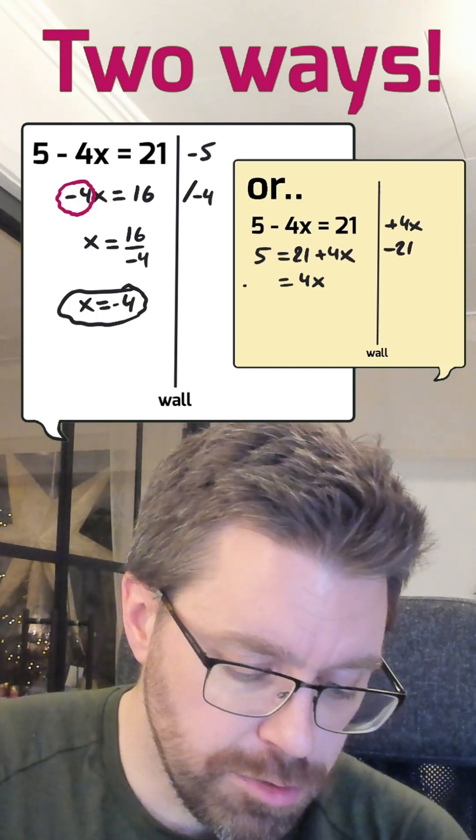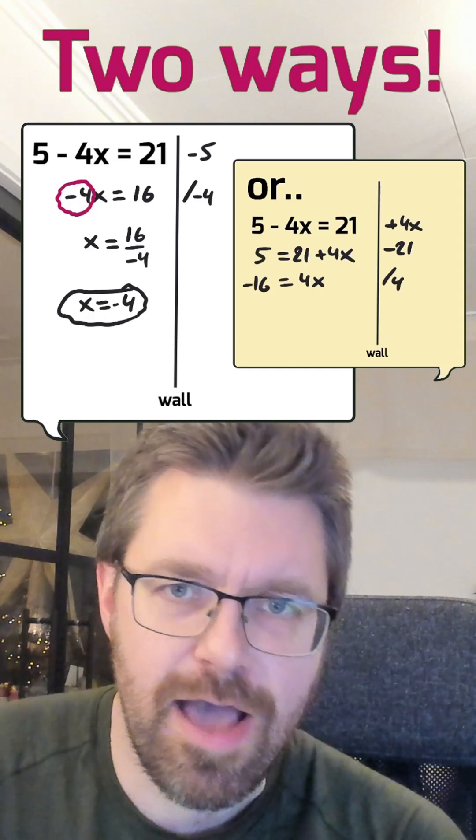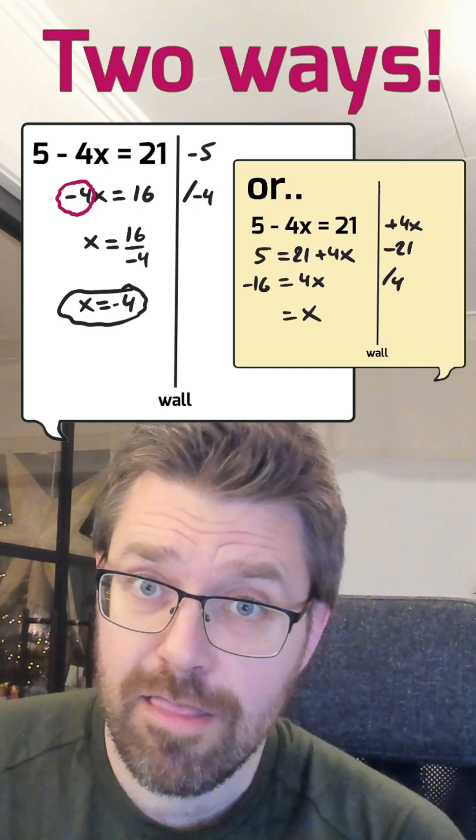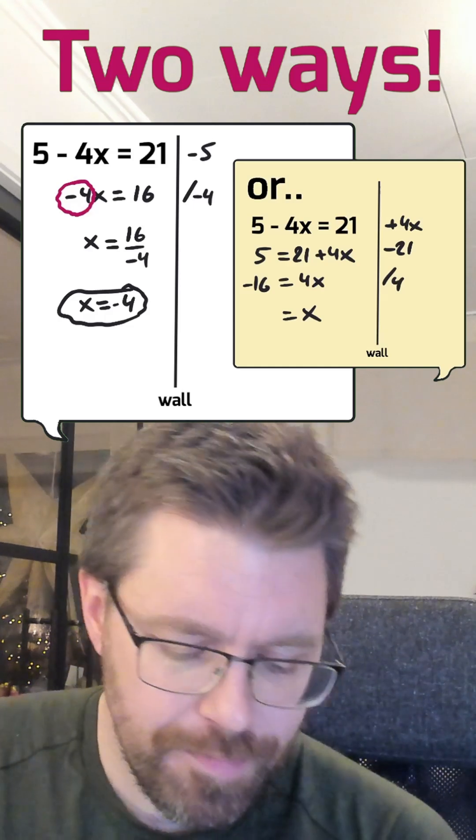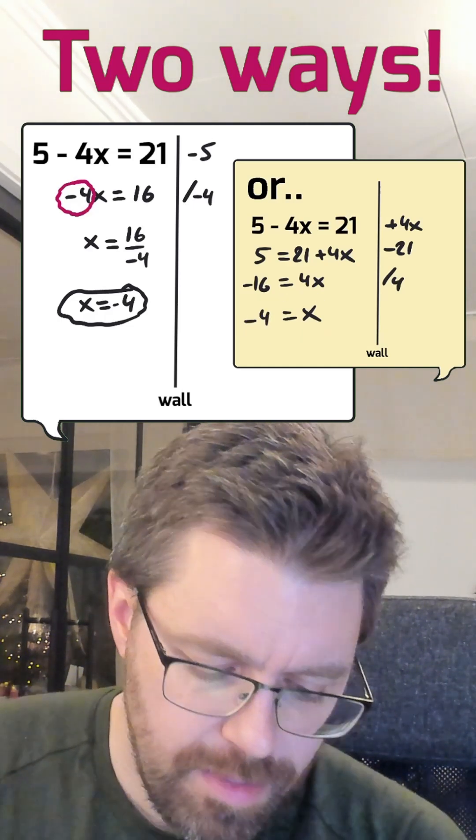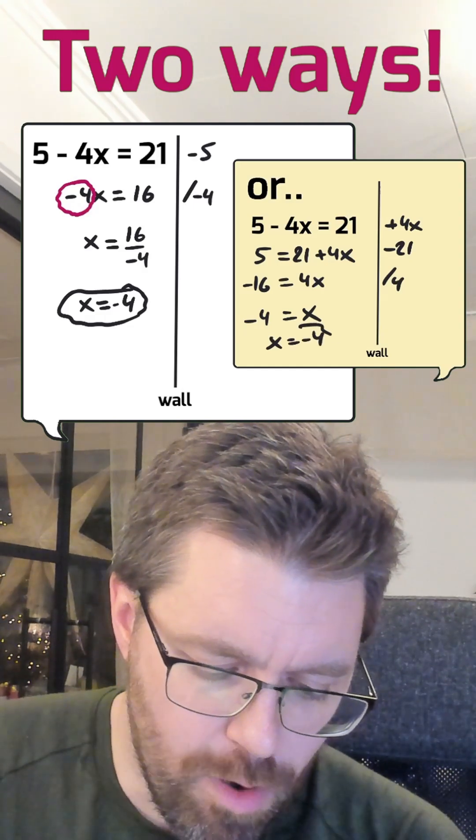But on the left side, you got minus 16 and then divide by 4. And then, you only got x left on the right side. And it equals minus 4. And your answer, it equals minus 4, of course.